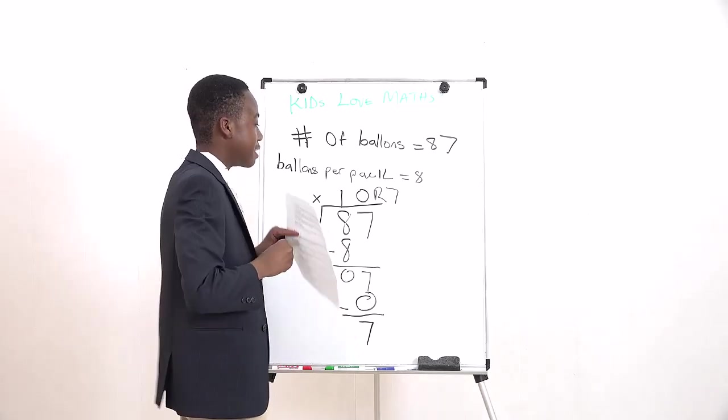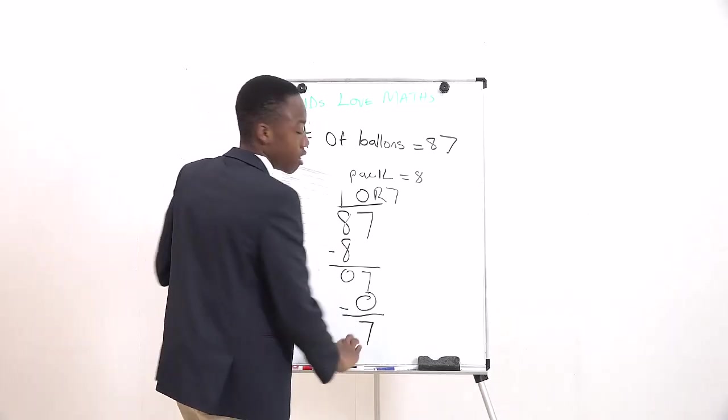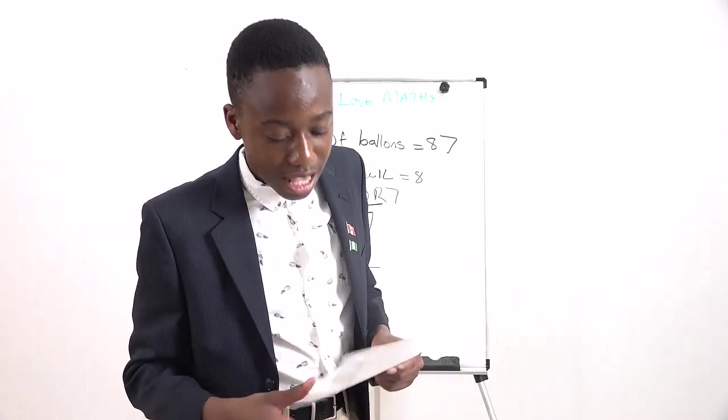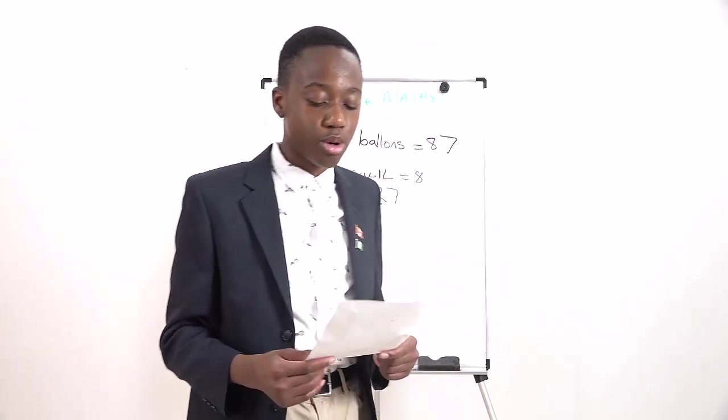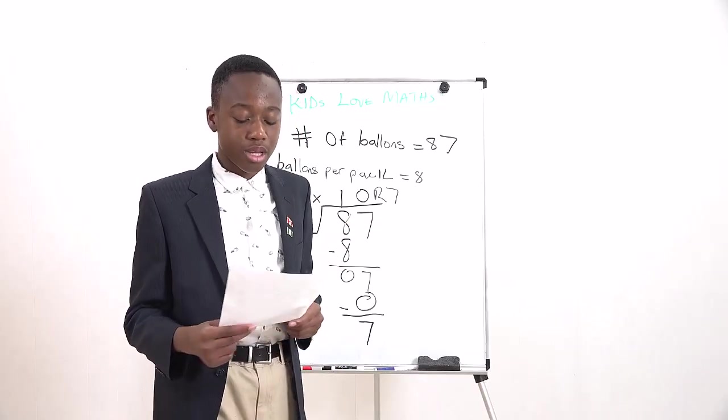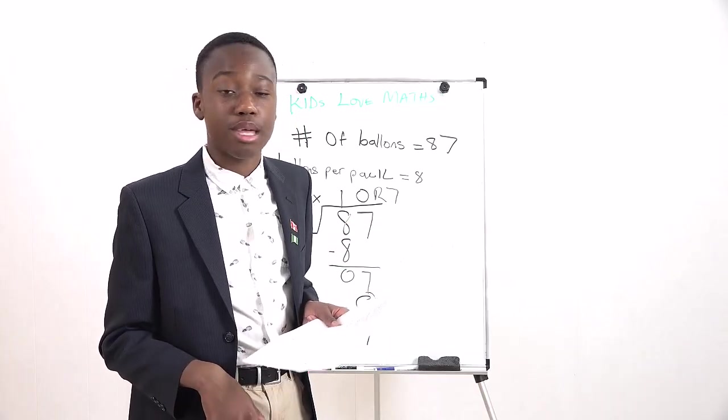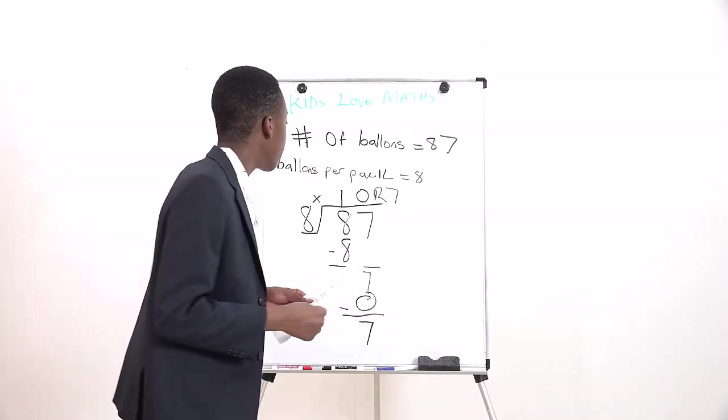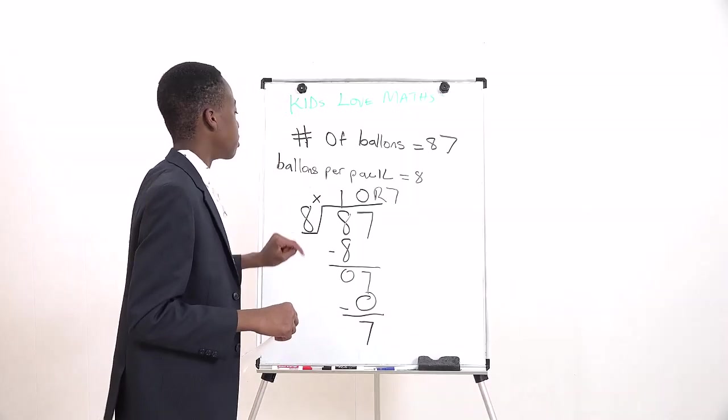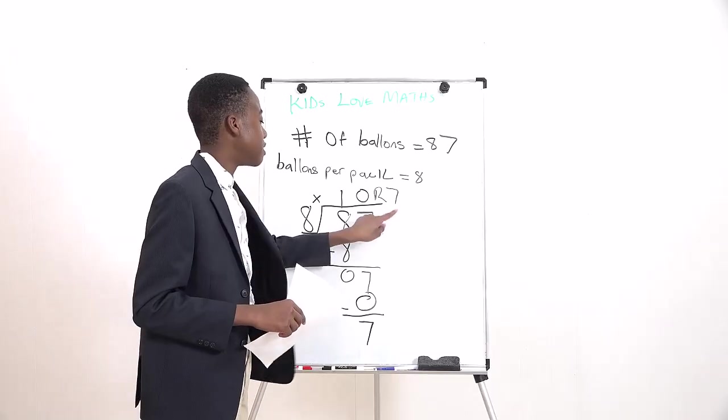So the remainder is 7. The answer is we'll have 10 packs with 8 balloons each, so 80 balloons in total, and 7 balloons will be left. To check our answer: 10 times 8 equals 80, and 80 plus 7 equals 87.